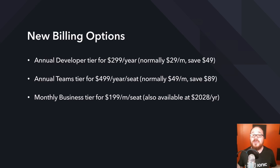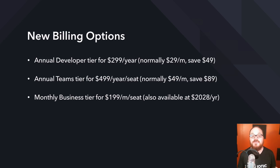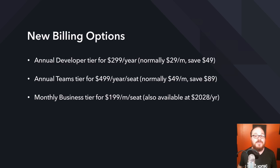We've heard you guys loud and clear — you wanted annual discounts. We have released two new annual plans for Developer and Teams. If you pay up front for a year, you'll save either $49 or $89. We have also changed the Business tier to allow for monthly subscriptions as well — that's $199 a month per seat, instead of having to pay the two grand all at once for annual billing.